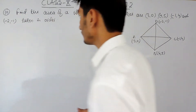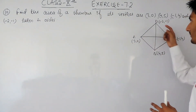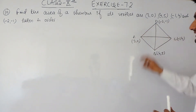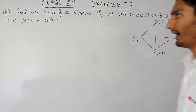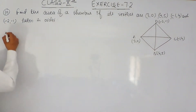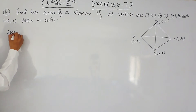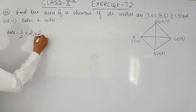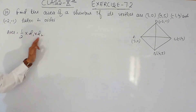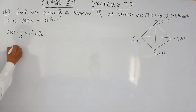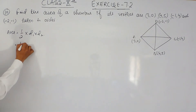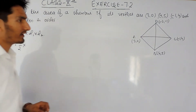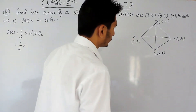So here we have to find the area of this rhombus and the coordinates of all 4 vertices are given to us. The hint is given that the area of a rhombus is equal to half d1 into d2, meaning half the product of its diagonals. So to find the area, we must know the length of each diagonal.